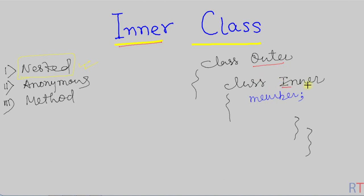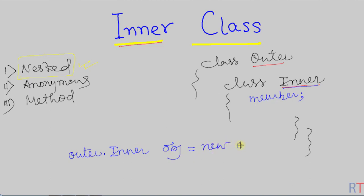To create one object of the inner class, we need to write outer class name dot inner class name, then the name of the object, and then we have to write new outer — which is the instance of the outer class — dot new inner. This way we can create an object of the inner class and access its members.